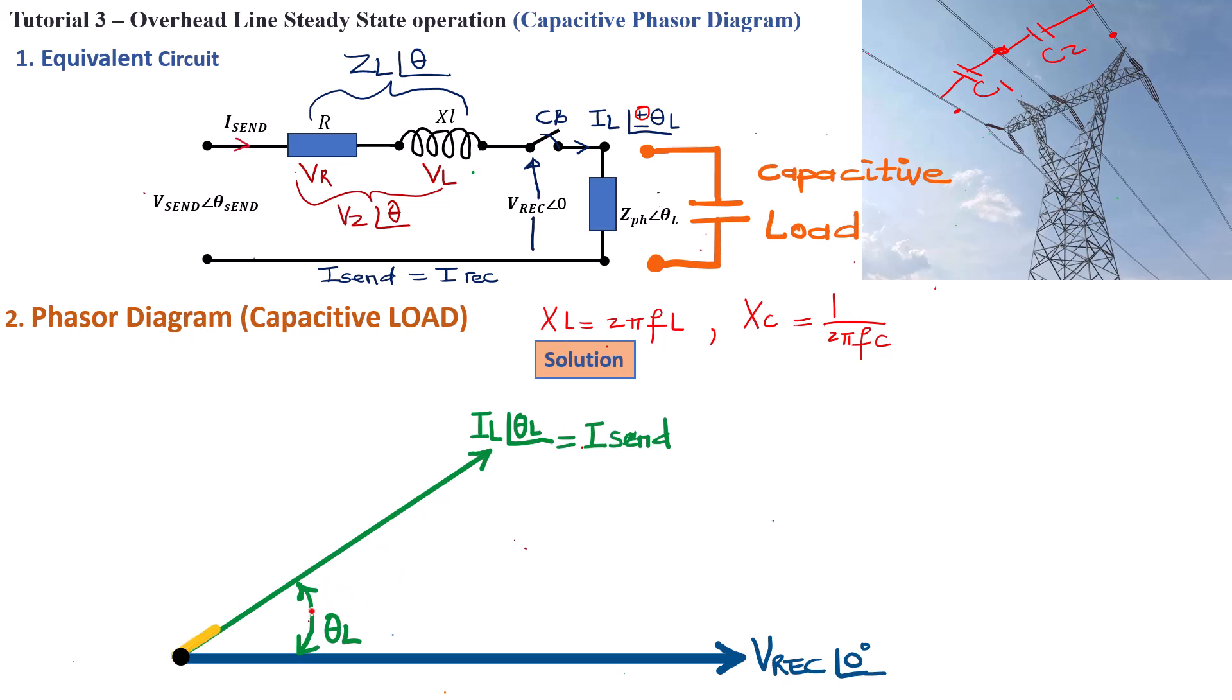The first situation will be VR, the voltage across the resistance of the cable is going to be in phase with this current IL, which is the same current as I-send. So that voltage will be in phase with IL, that will be VR.